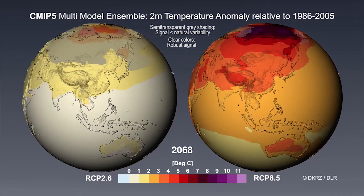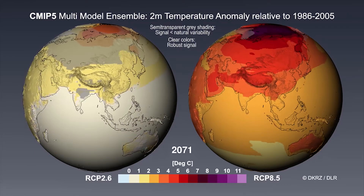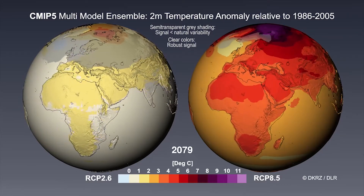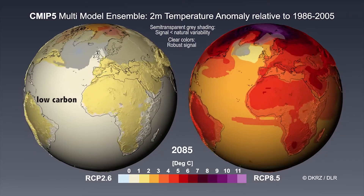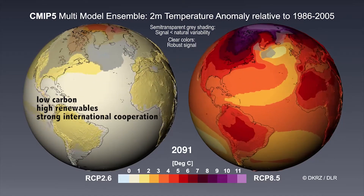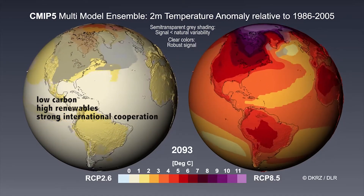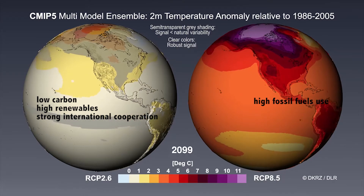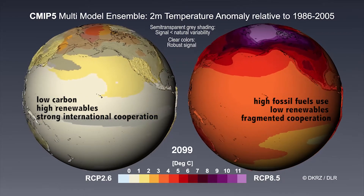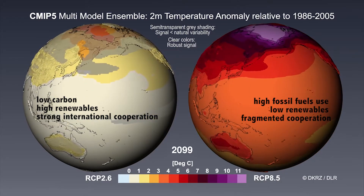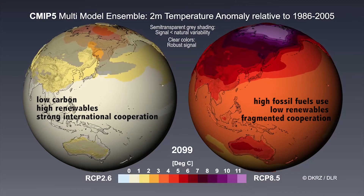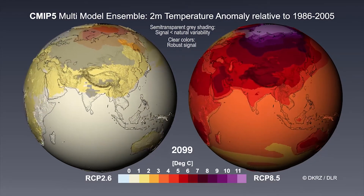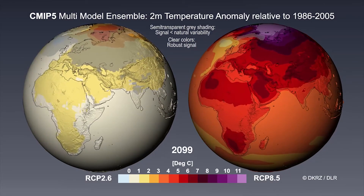We still have some uncertainty, but the models clearly show us two different futures. On the left, we see an optimistic future with low carbon, high renewables, and strong international cooperation. And on the right, we see high fossil fuel use, low renewables, and fragmented cooperation — sort of business as usual. But the CMIP models show us our very clear choices for future climate.